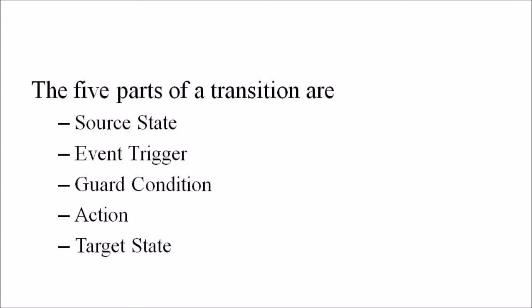The five parts of a transition are: source state, event trigger, guard condition, action, and target state. The source state is the state affected by the transition. Event trigger means the occurrence due to which an object in the source state undergoes a transition if the guard condition is satisfied. The guard condition is a boolean expression which, if true, causes a transition on receiving the event trigger. The action is an uninterruptible and atomic computation that occurs on the source subject due to some event. The target state is the destination state after the completion of transition.